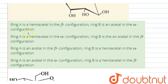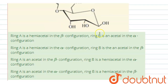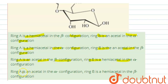The first option is: ring A is a hemiacetal in the beta configuration, ring B is an acetal in the alpha configuration. Ring A is an acetal in the beta configuration, ring B is a hemiacetal in the alpha configuration. Ring B is an acetal in the beta configuration. Ring B is a hemiacetal in the alpha configuration. Ring A is an acetal in the alpha configuration and ring B is a hemiacetal in the beta configuration.